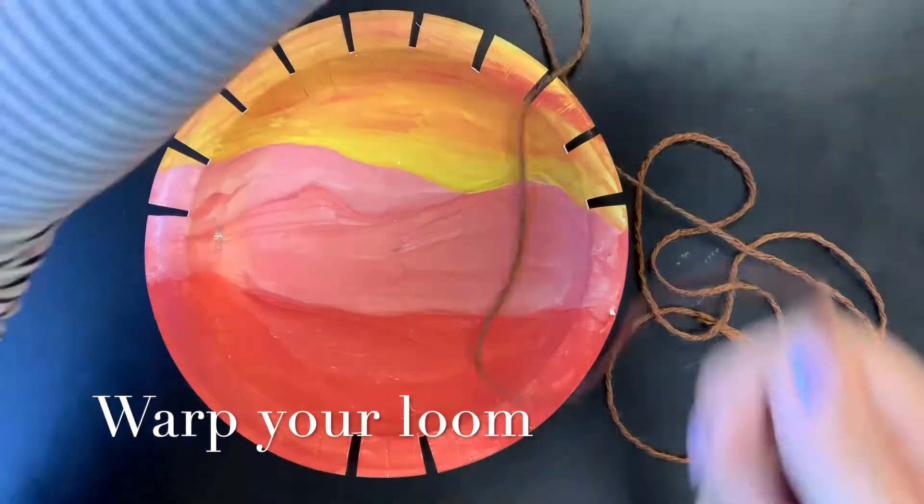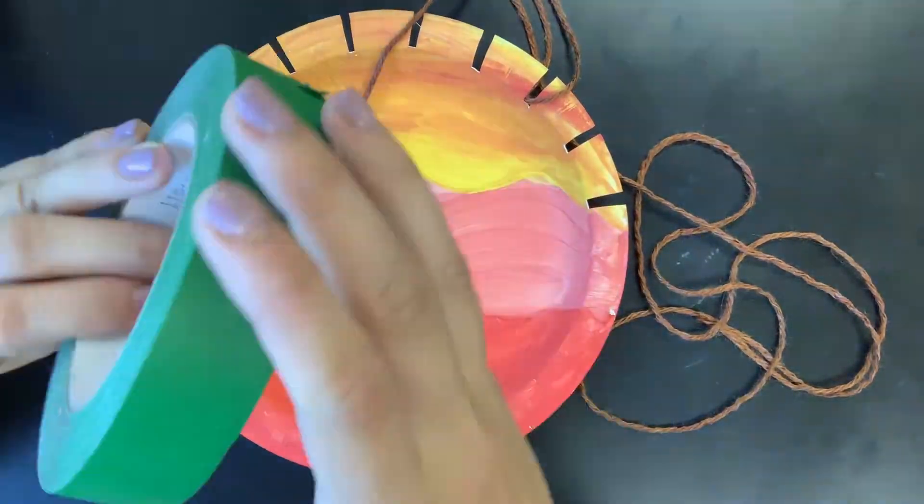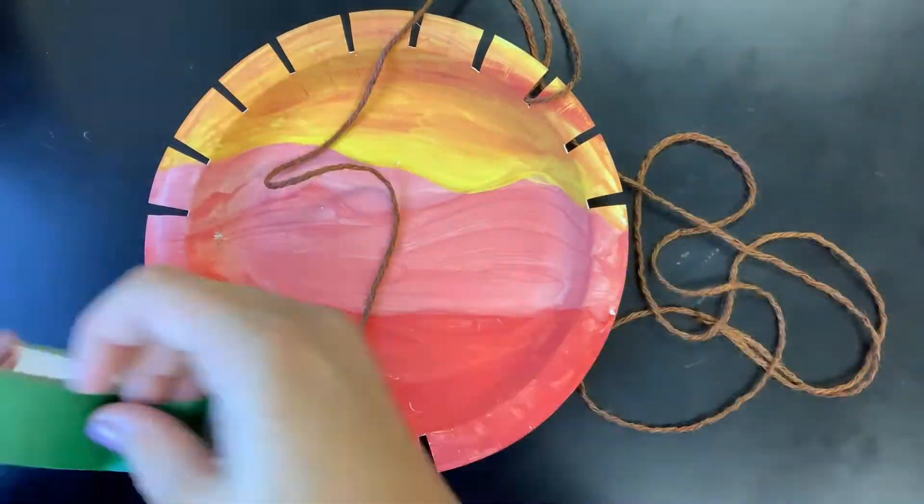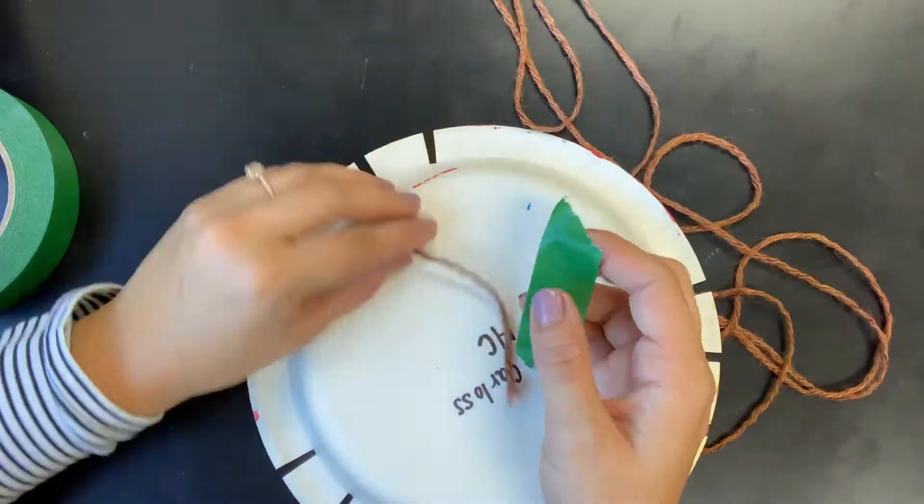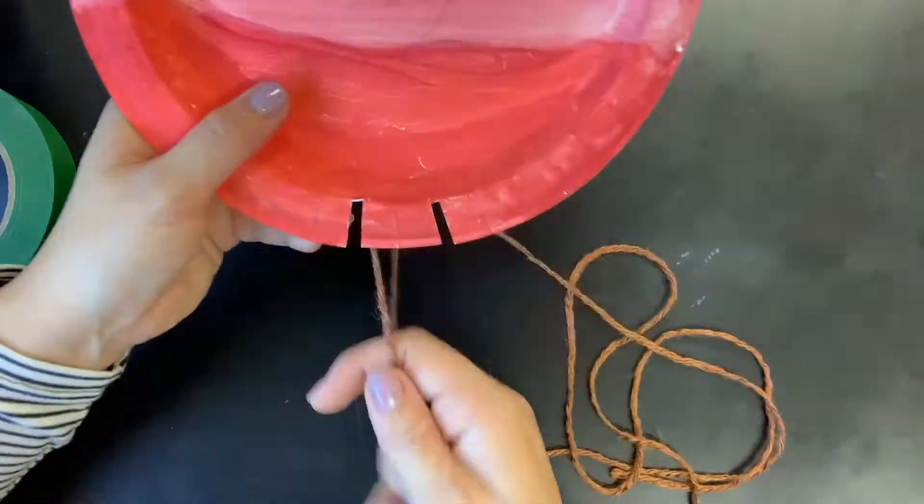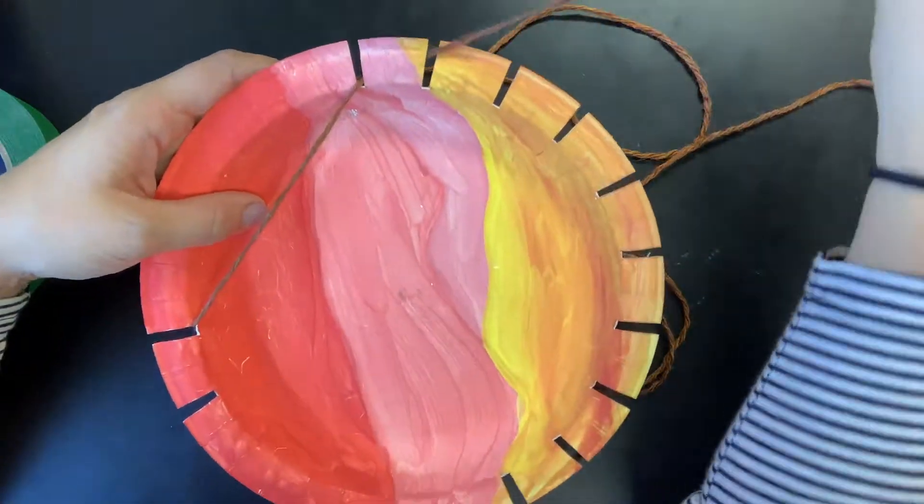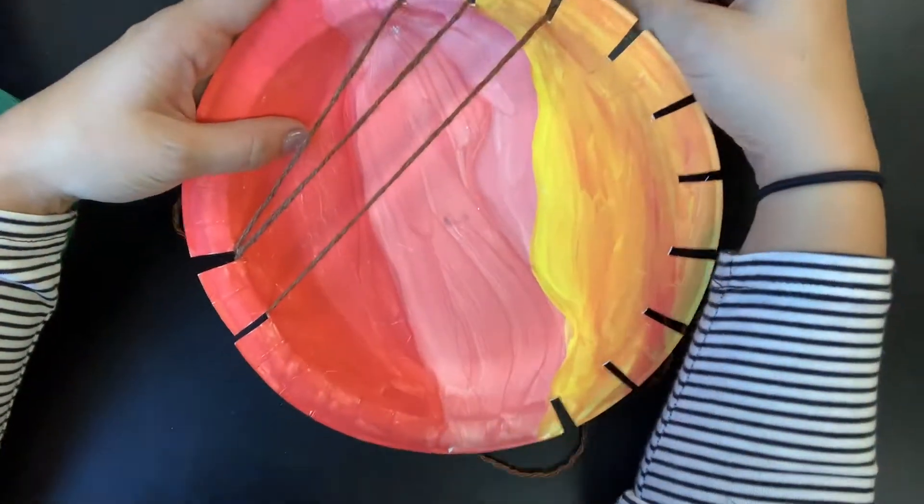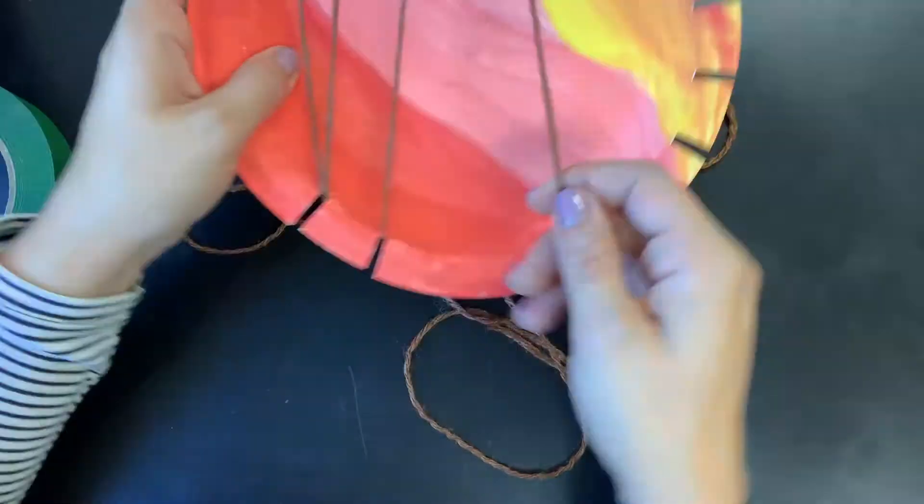Now that we've cut our notches, it's time to warp our loom. Take the end and tape it to the back of your paper plate. Make sure your name is on the back. Then put your loom through the first notch, up to the top, around both of the bottom notches.